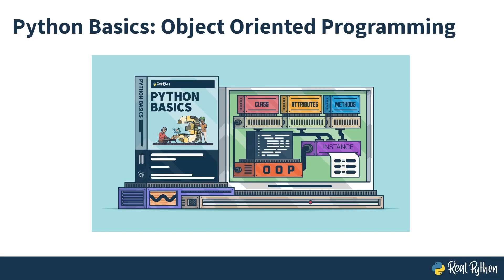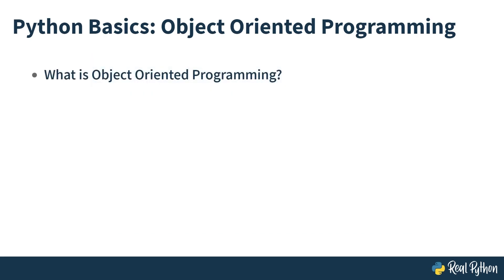Welcome to Python Basics, Object-Oriented Programming. That's quite a hefty term. What does it even mean? Object-oriented programming is just a fancy way to say that you rely heavily on objects when writing code. Keep watching this course to find out what kind of objects we're talking about.